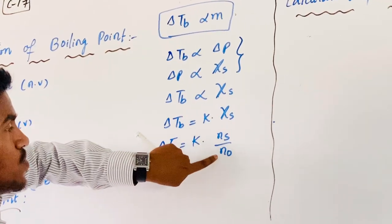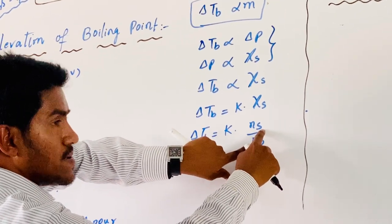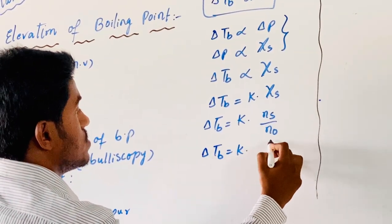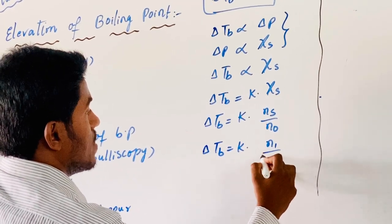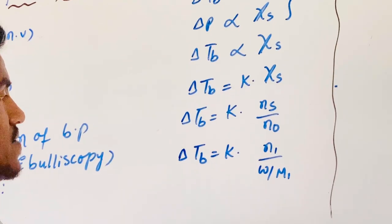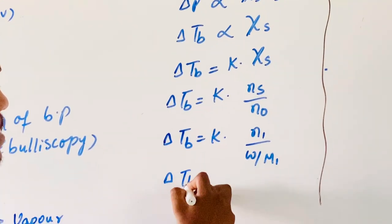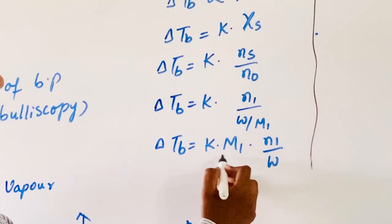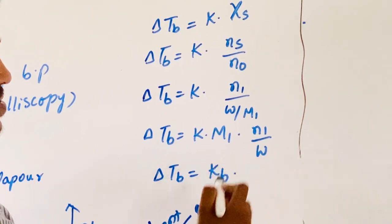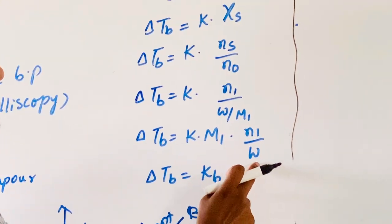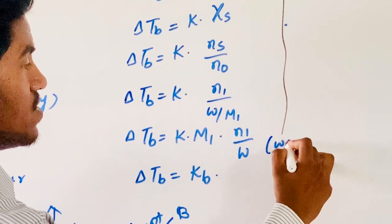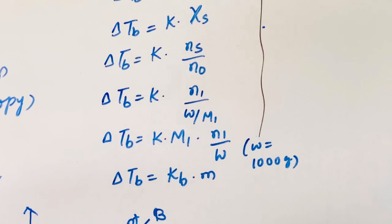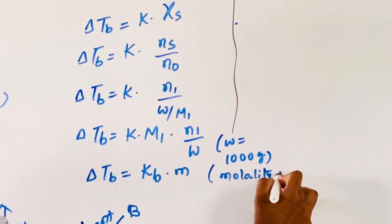That can be written as delta Tb equals K into Ns by N0, the number of moles of solute divided by number of moles of pure solvent. From this, delta Tb equals K into (weight of solute divided by gram molecular weight of solute) divided by weight of pure solvent. If W equals 1000 grams (1 kg), then Ns by W gives us M, molality. M represents molality in terms of number of moles per kg.